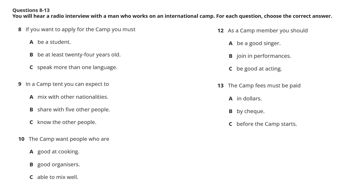And what about accommodation? Well, the international camp organisers supply tents which sleep up to four people, but you are unlikely to know the people who you'll be sharing a tent with. The nationalities are mixed, so you'll be sharing with people who may not even speak your language.